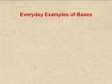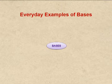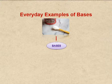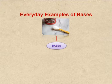Let us now see everyday examples of bases. We all love cakes — they are soft and spongy. Have you ever wondered why? It is because in cakes we add baking powder, that is sodium bicarbonate, which is a base. It reacts with the acidic compound present in the cake and releases carbon dioxide gas, which makes the cake so spongy. So baking powder is an example of a base.